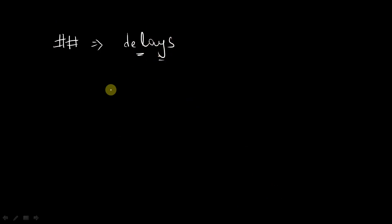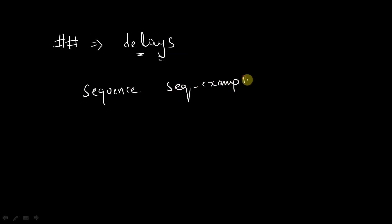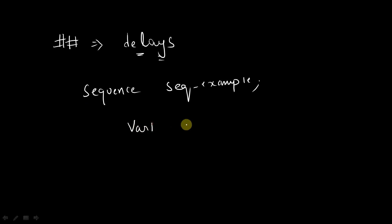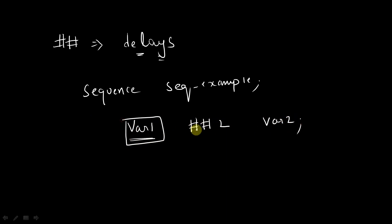So let's see how to construct this particular sequence. The syntax is the same — we are going to write the sequence keyword followed by the sequence name, let's say sequence_example. In sequence_example, what we are going to write is: we have two variables. So this is variable one, hash hash two, variable two. That is, if variable one becomes high, then after two clock cycles, my variable two should become high. But if variable one is false, the assertion is going to fail there itself. And here, end sequence.